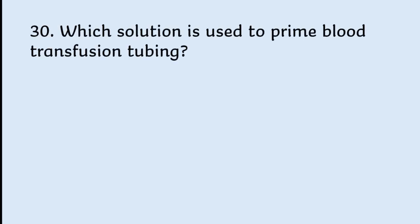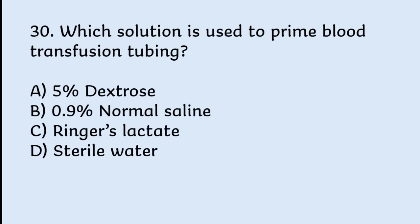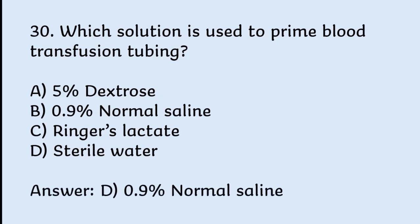Which solution is used to prime blood transfusion tubing? Options: 5% dextrose, 0.9% normal saline, Ringer's lactate, sterile water. Correct answer is 0.9% normal saline.